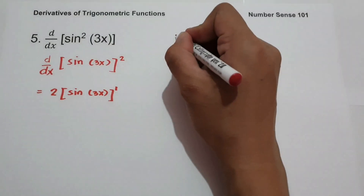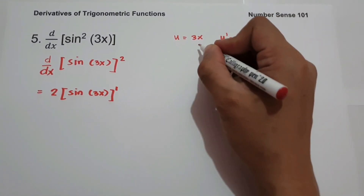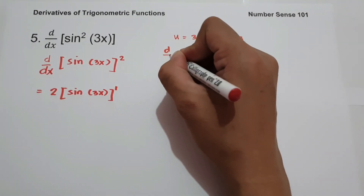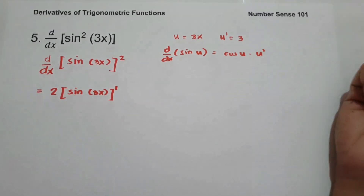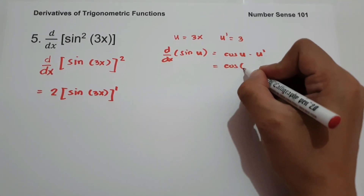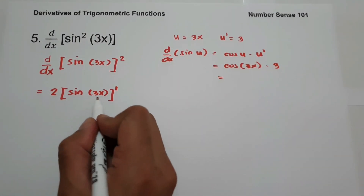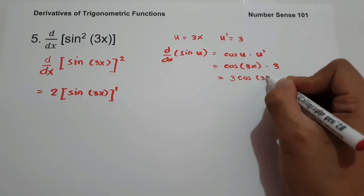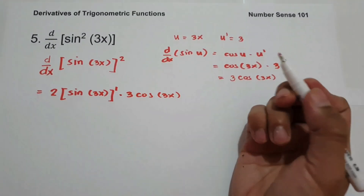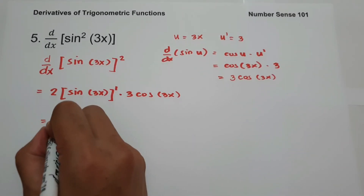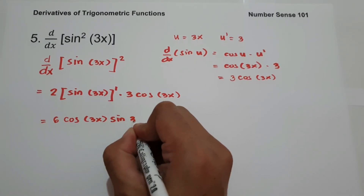To find the derivative of sin(3x), the value of u is 3x and u' is the derivative of 3x, which is 3. The derivative of sin(u) is cos(u) times u', so we get cos(3x) times 3. Therefore the derivative of sin(3x) is 3cos(3x). Substituting back: 2 × 3 = 6, giving us 6cos(3x) · sin(3x) as our final answer.